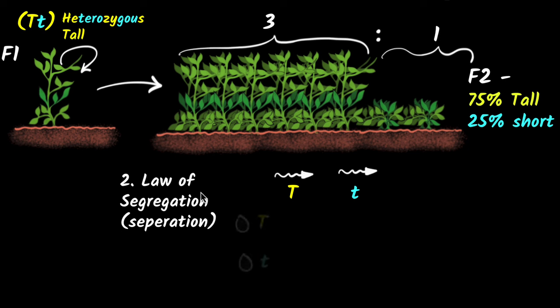Similarly, the egg cells. Some egg cells will get capital T from here, and some other egg cells will get small t from here. And now when fertilization happens, depending upon which sperm goes and fertilizes which egg, we will get different combinations.